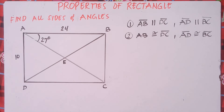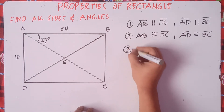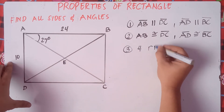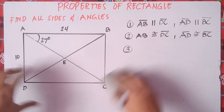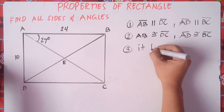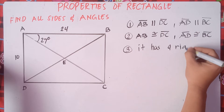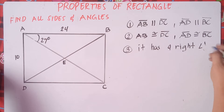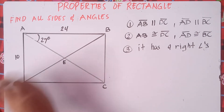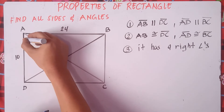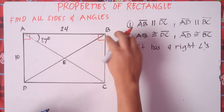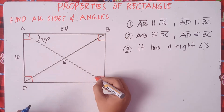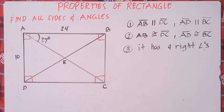And then the third property: it has four right angles. So angle A should be a right angle, angle B should be 90 degrees, angle D and angle C should also be 90 degrees. It has four right angles.